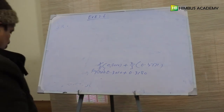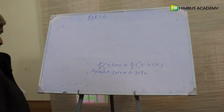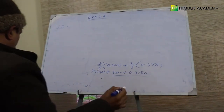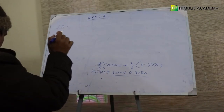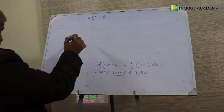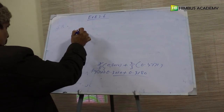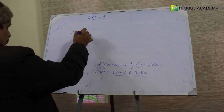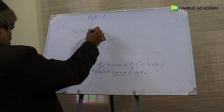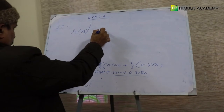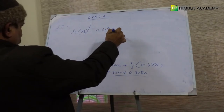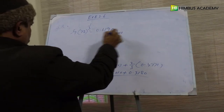0.3010 اور 0.3180 کو plus کرنے سے کیا آتا ہے — ان دونوں کو plus کرنے سے آتا ہے: log of third root of 72 is equal to 0.6190. یہ ہمارا answer ہے۔